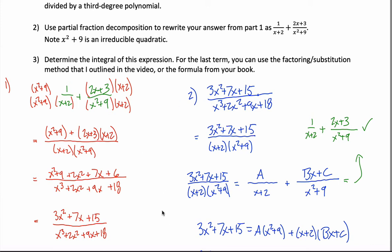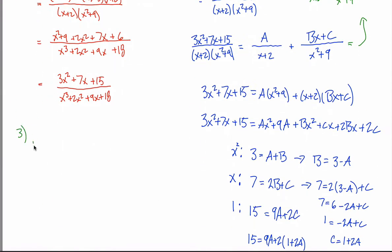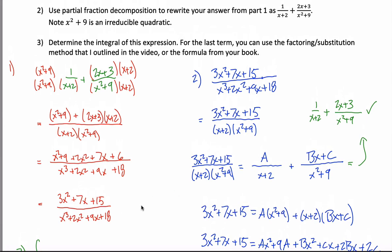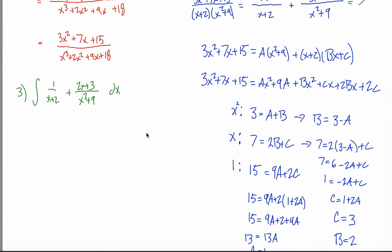That color coding was maybe overkill, but that's harder than anything you should expect to be tested on with partial fraction decomposition. Now we still have step three to do. For step three, we want to find the integral of one over x plus two plus two x plus three over x squared plus nine dx. The trick is to think of it as a bunch of different integrals: the integral of one over x plus two dx, plus the integral of two x over x squared plus nine dx, plus the integral of three over x squared plus nine dx.